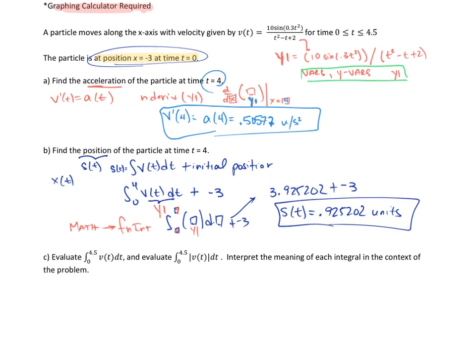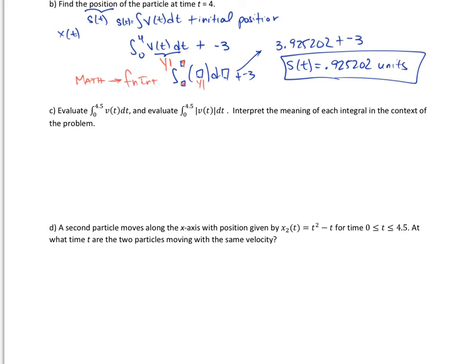Moving on to the next part of this question. It says evaluate the integral from 0 to 4.5 of v(t) dt, and evaluate the integral from 0 to 4.5 of the absolute value of v(t) dt, and interpret the meaning of each integral in the context of the problem. When I integrate, and we just did this above, when I took this integral, I found the displacement.